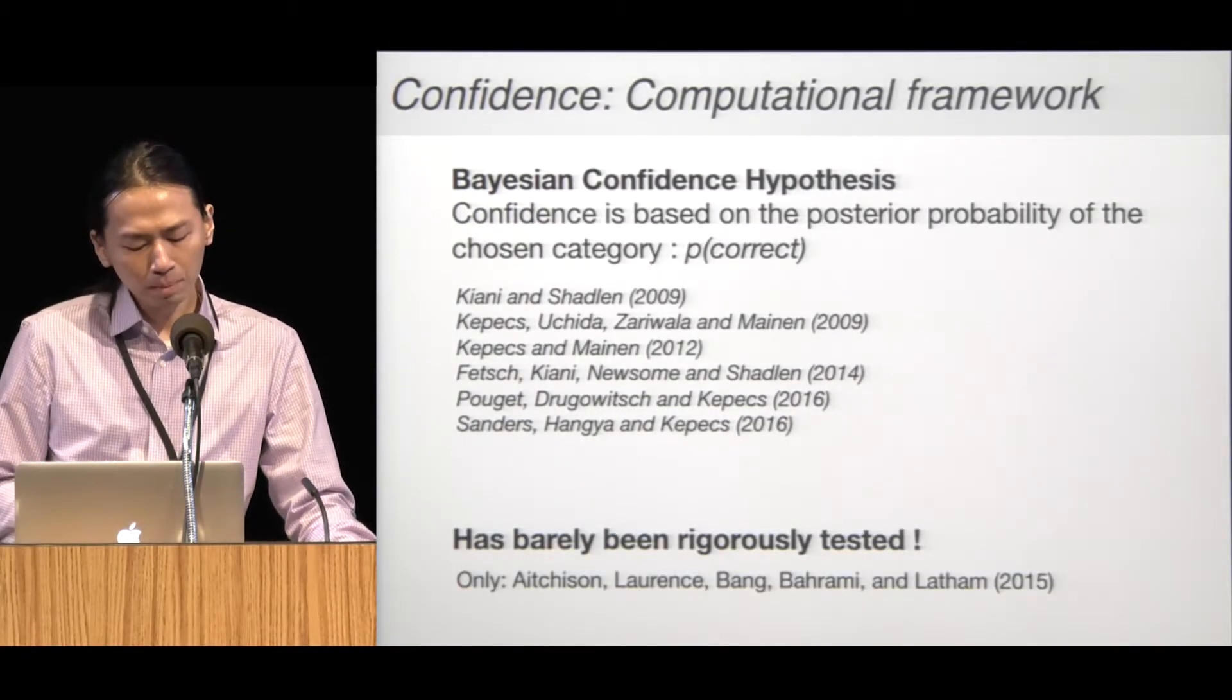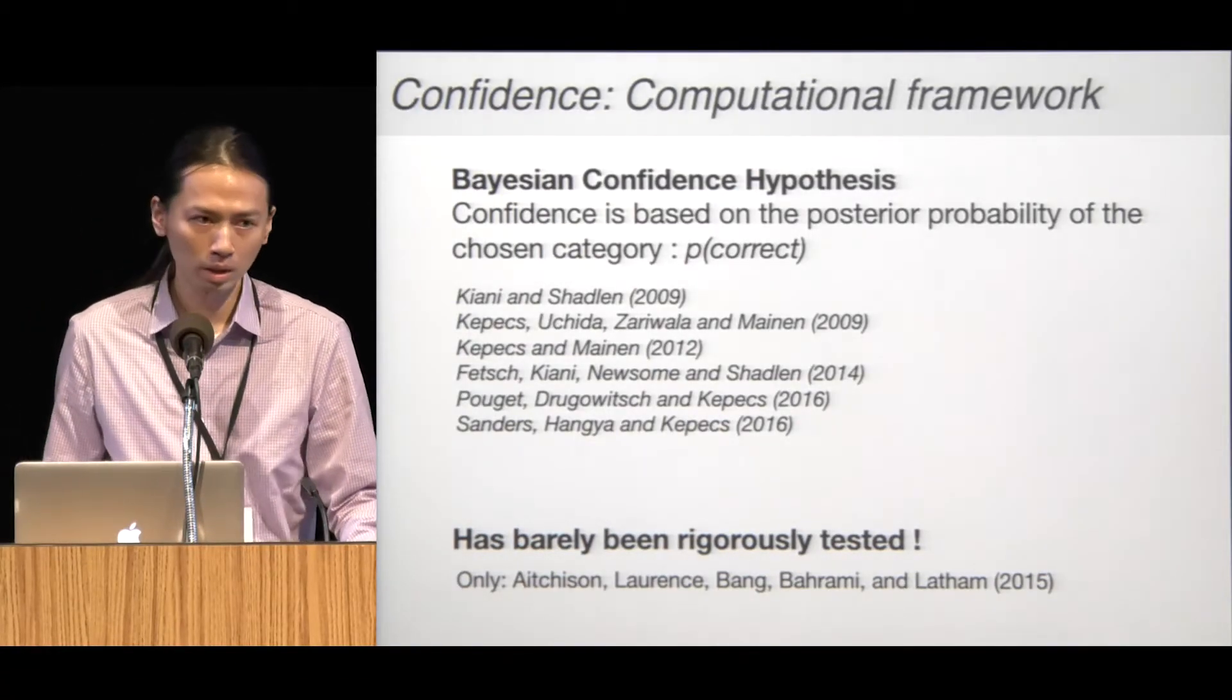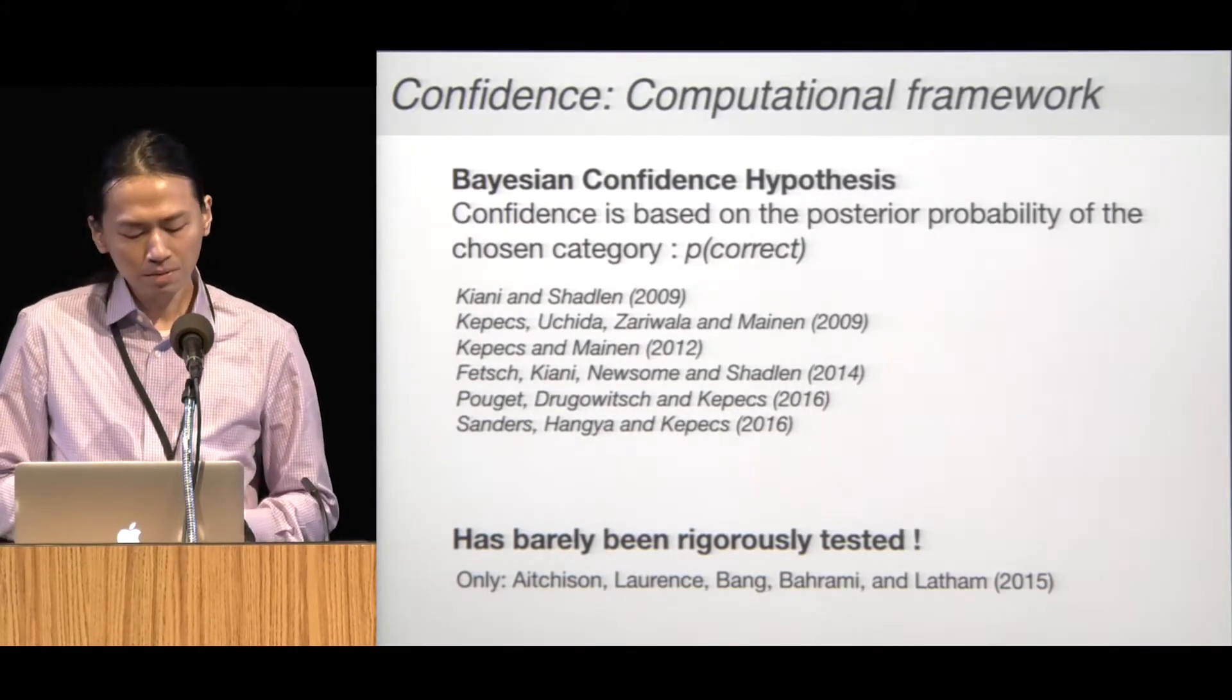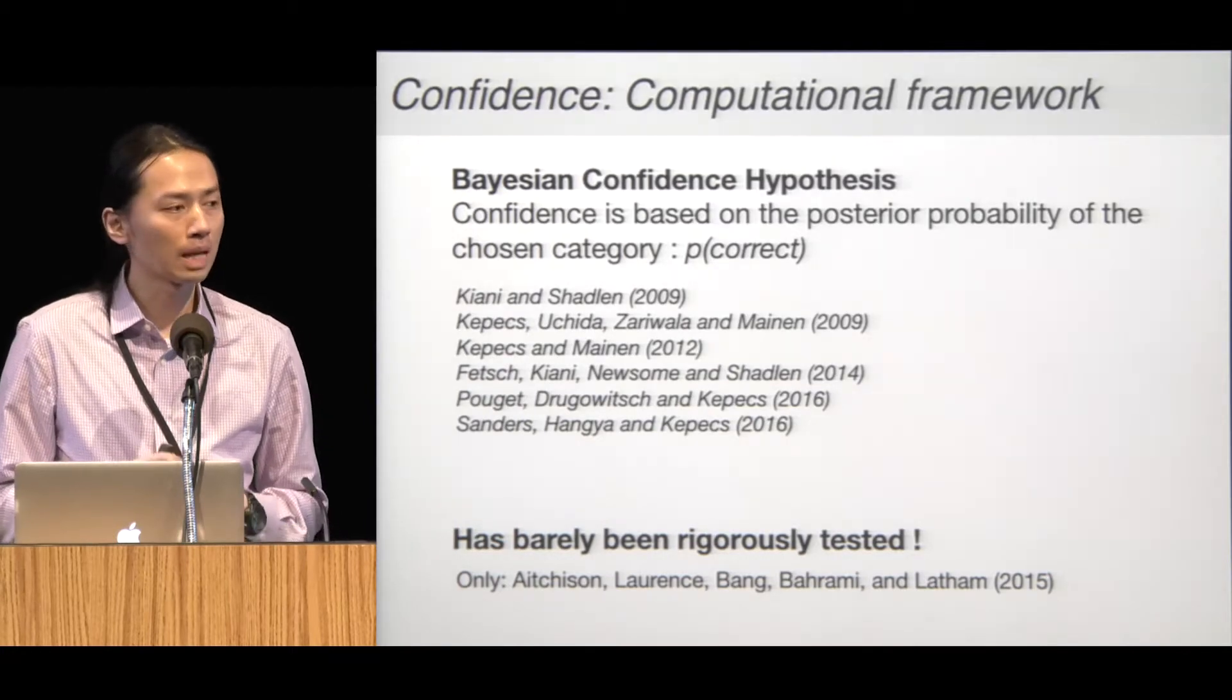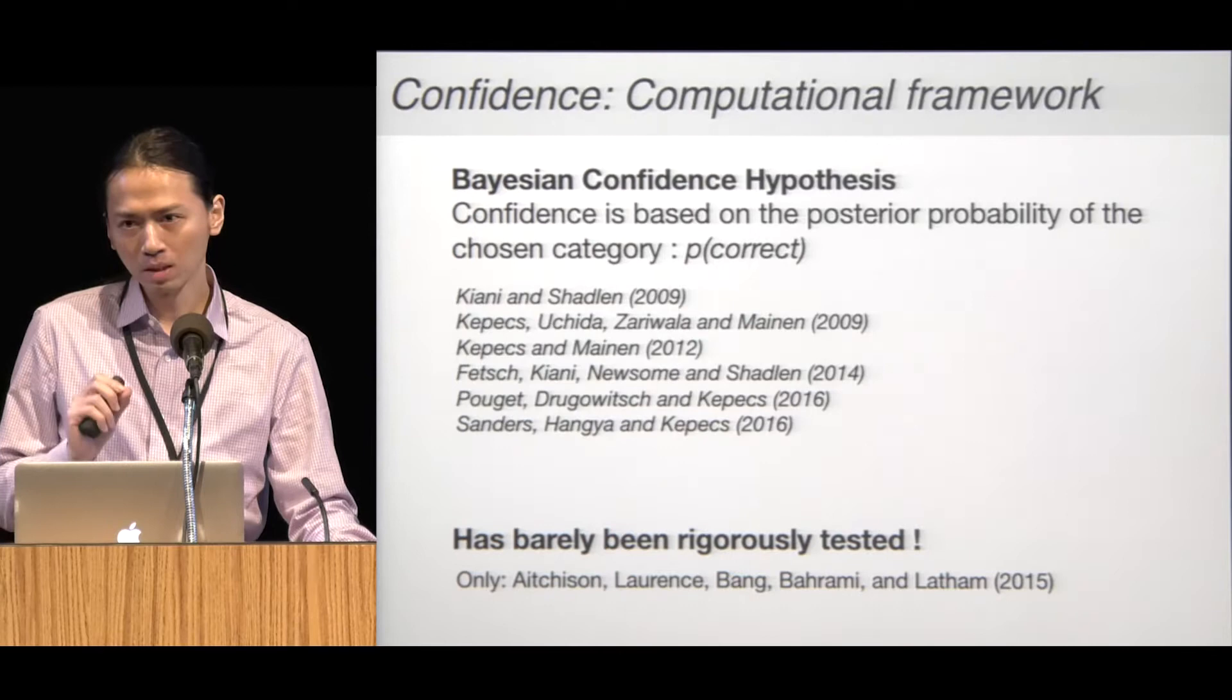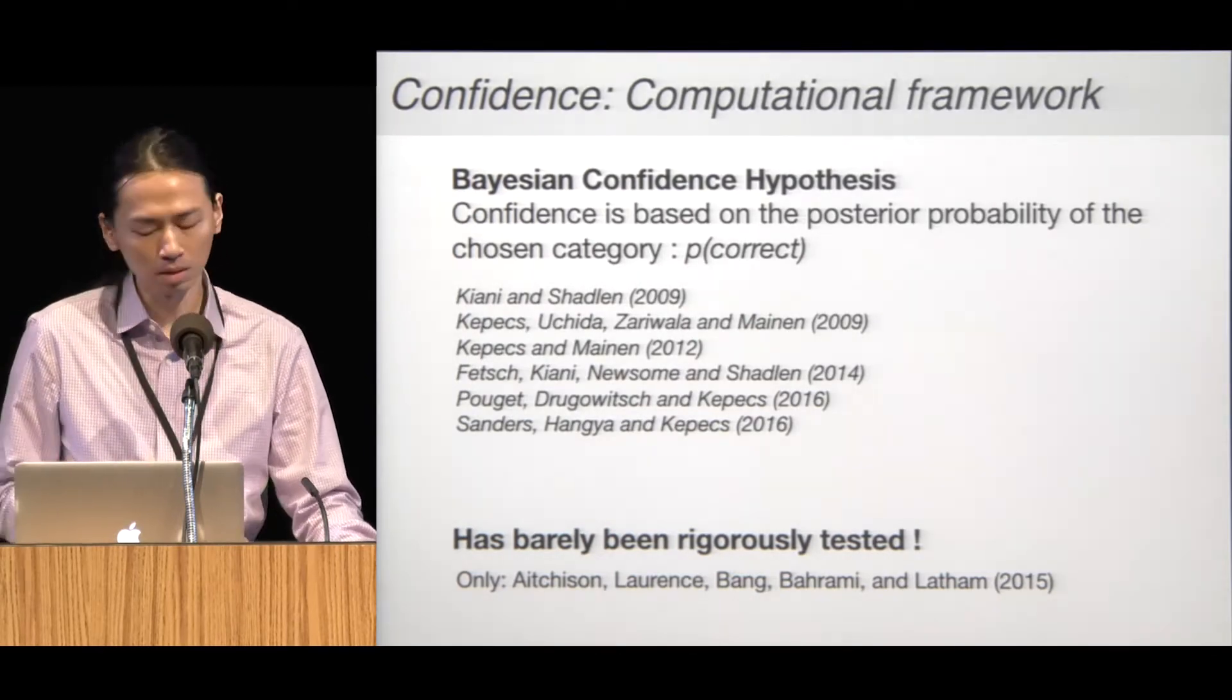Even though Bayesian confidence hypothesis is often considered to be the framework to describe the confidence report in a two-choice task, very often the Bayesian hypothesis is not rigorously tested with alternative models. Sometimes it's because it's very difficult to distinguish the Bayesian model from other models.